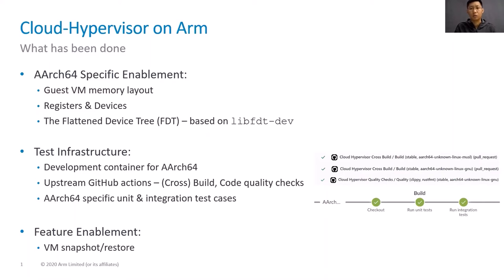Currently, our contribution for the AArch64 platform can be divided into three parts. The first is enabling Cloud Hypervisor on the AArch64 platform, where we implemented the guest VM memory layout, platform-specific registers, and devices. We also created a Rust foreign function interface for the libfdt library to implement the flattened device tree, which is used in booting the VM. Our second contribution is the AArch64 test infrastructure, including enablement of the development container, as every development and test script is executed in the container. After Cloud Hypervisor was enabled on ARM, we added AArch64-specific checks as well as unit and integration tests to the community CI. Our last key contribution was feature enablement, including VM snapshot and restore on ARM.